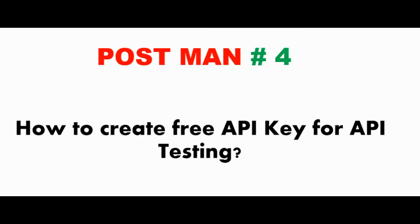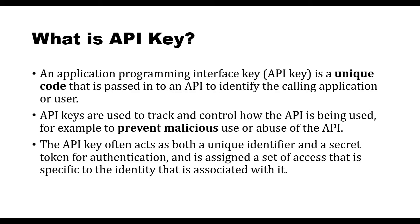Before moving to API key generation, I am going to give you a short note on API key. What is an API key? Application Programming Interface key — it is a unique key or secret code. Using this secret code only, we are going to be identifying and calling the application or the user. If you want to access any application and you know the API key, you can be able to access the backend level.